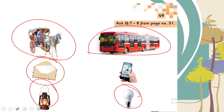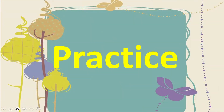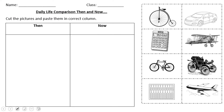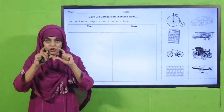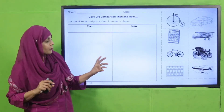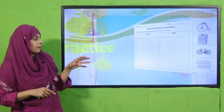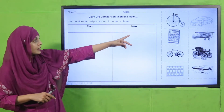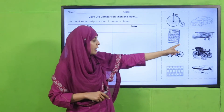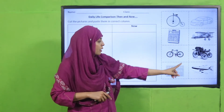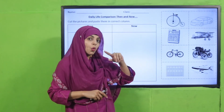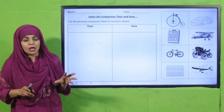This is how there is change between past and present times, as clearly seen from these pictures. Now it is time for practice. You can download this worksheet from the description box below this video or get it in print from your teacher. Write your name and class, then cut the pictures and paste them in the correct column. Different pictures are given — cut them out using the stencil lines provided, and paste them in the correct column: which picture belongs to the past and which to the present.